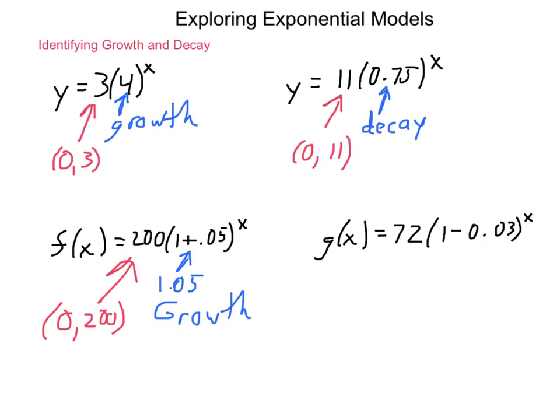Now, g of x equals 72 times the quantity of 1 minus 3 hundredths to the x. If we simplify this group, we get 97 hundredths, which shows decay. And our starting value is going to be 0, 72. And this would be something similar to a bacteria being treated. It has a 3% rate of decay, meaning 3% between one time interval and the next will die off. And that's what you're looking for with medicines.